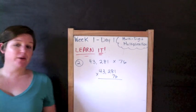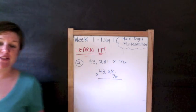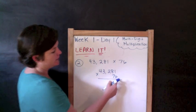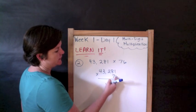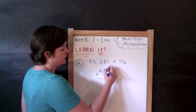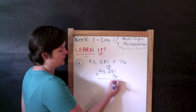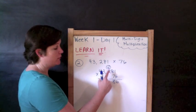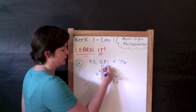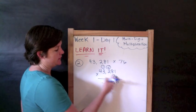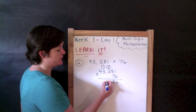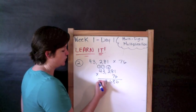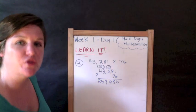We've got forty-three thousand two hundred eighty-one times seventy-six. It was written horizontally, I went ahead and wrote it vertically. Let's go. Start with the ones place. Six times one is six. Six times eight is forty-eight. Bring my four over, drop my eight down. Six times two is twelve. Twelve plus four is sixteen. Six times three is eighteen, plus one is nineteen. Six times four is twenty-four, plus one is twenty-five. Do you see why you have to be so quick with your multiplication tables?